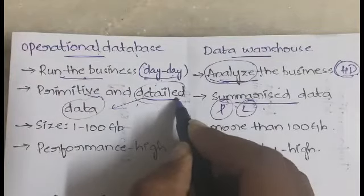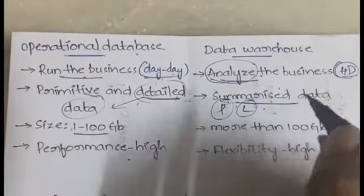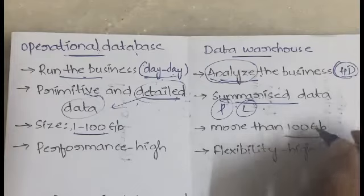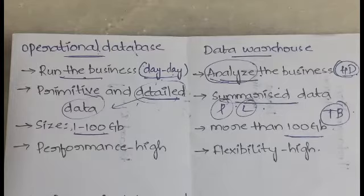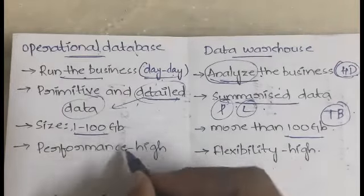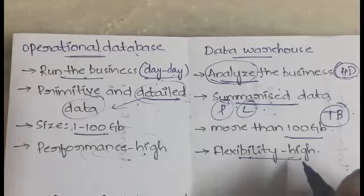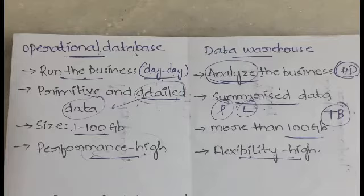The size of an operational database varies from 1 to 100 GB, whereas the size of a data warehouse is more than 100 GB and may extend up to terabytes, because a large amount of data is stored there. In terms of performance, an operational database has very high performance since it holds a smaller amount of data. In a data warehouse, flexibility is very high.